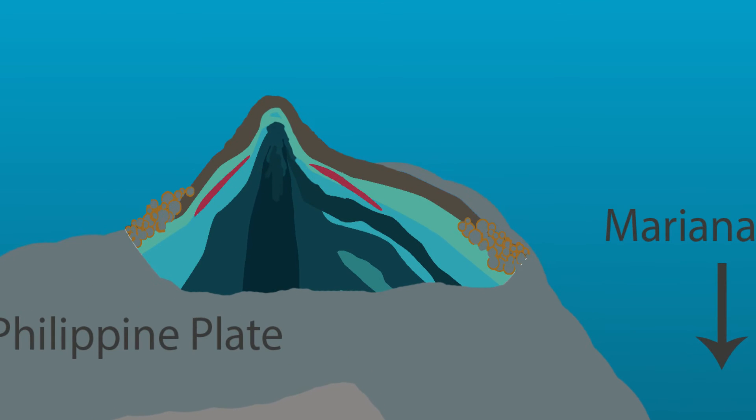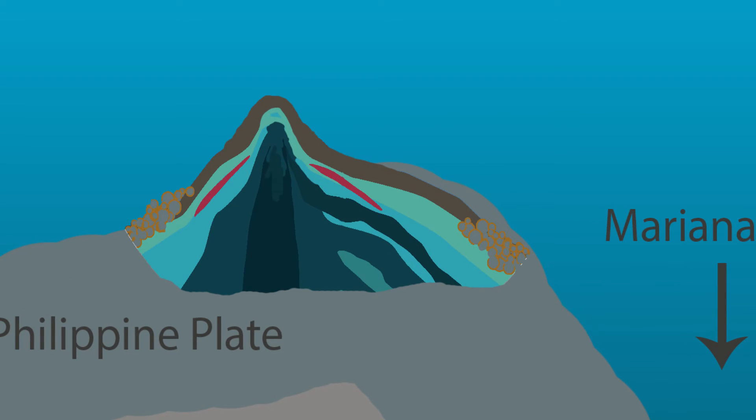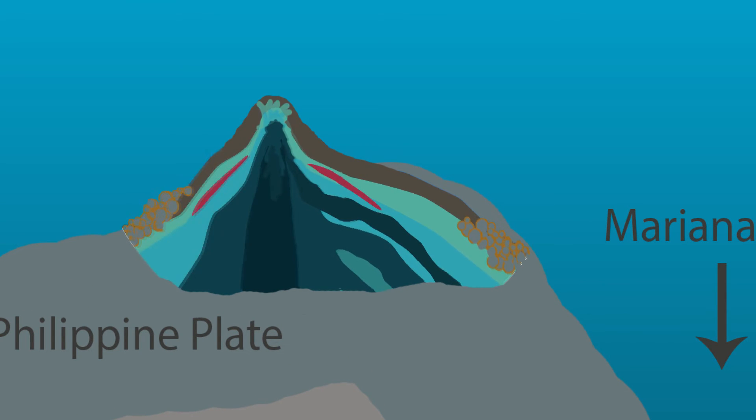These mud volcanoes release deep water and deep chemicals from the Earth and then they're added to the oceans. We'll try to establish chemical budgets — what is the flux of these different chemicals to the ocean.